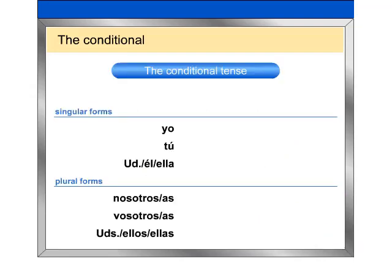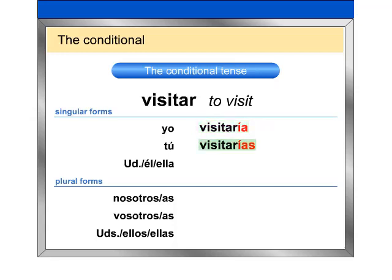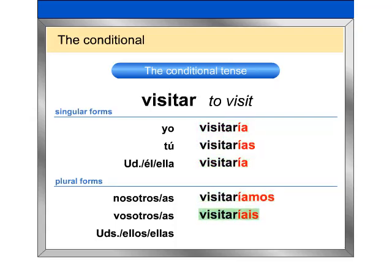Repeat the conditional forms of the verb visitar after me. Visitaría. Visitarías. Visitaría. Visitaríamos. Visitaríais. Visitarían.